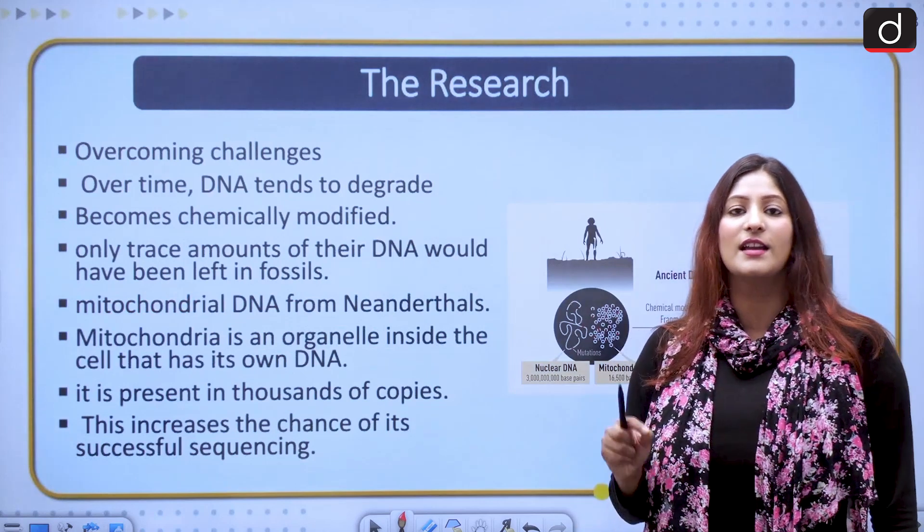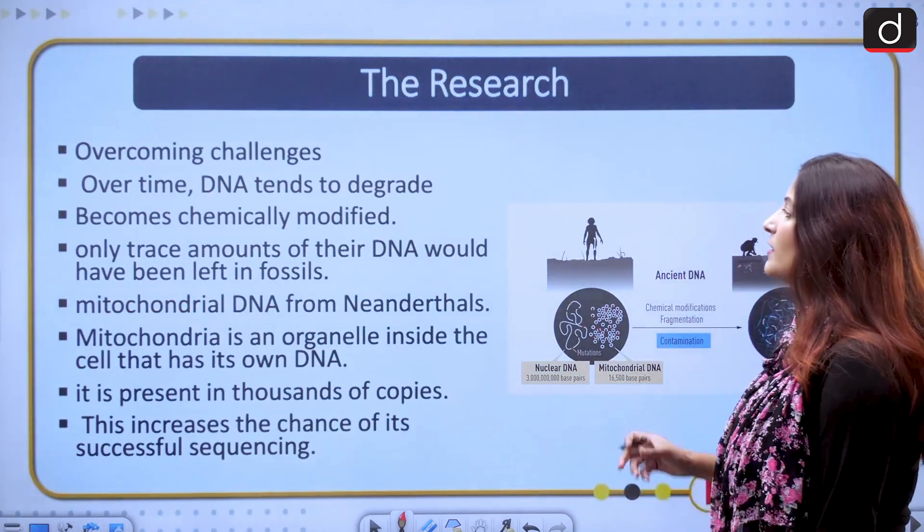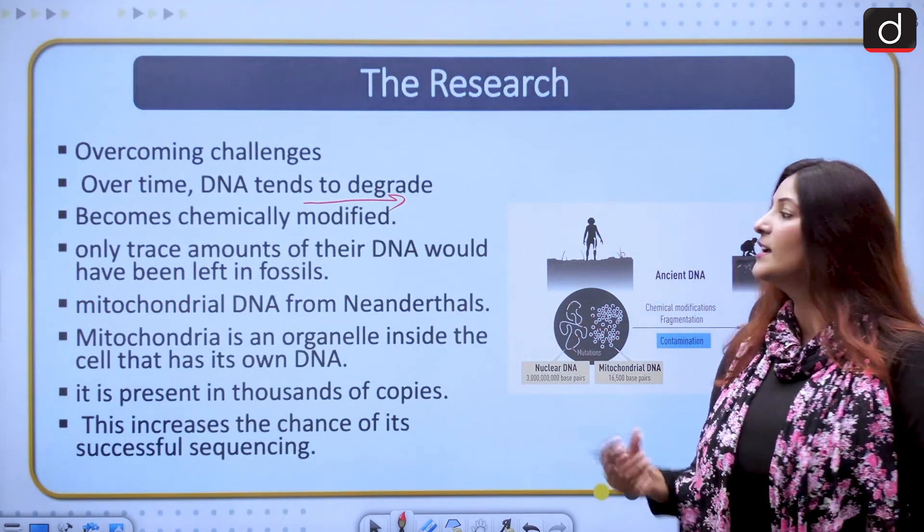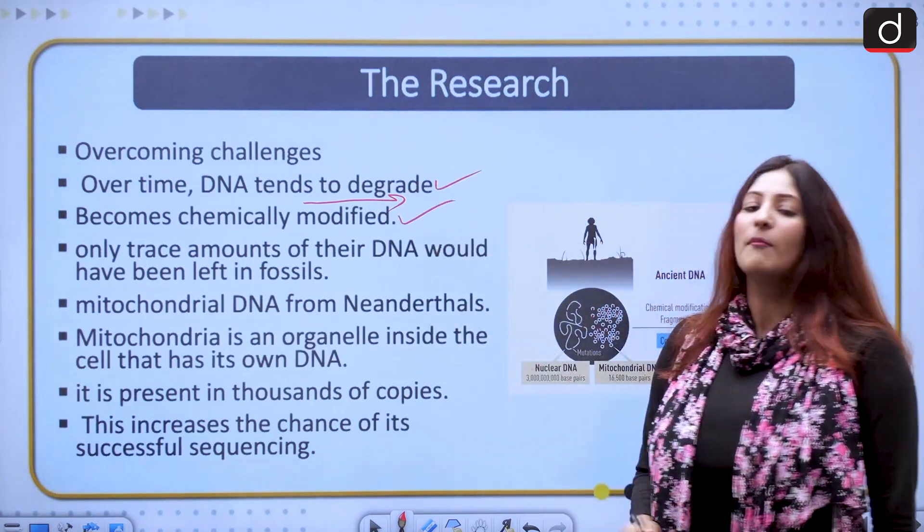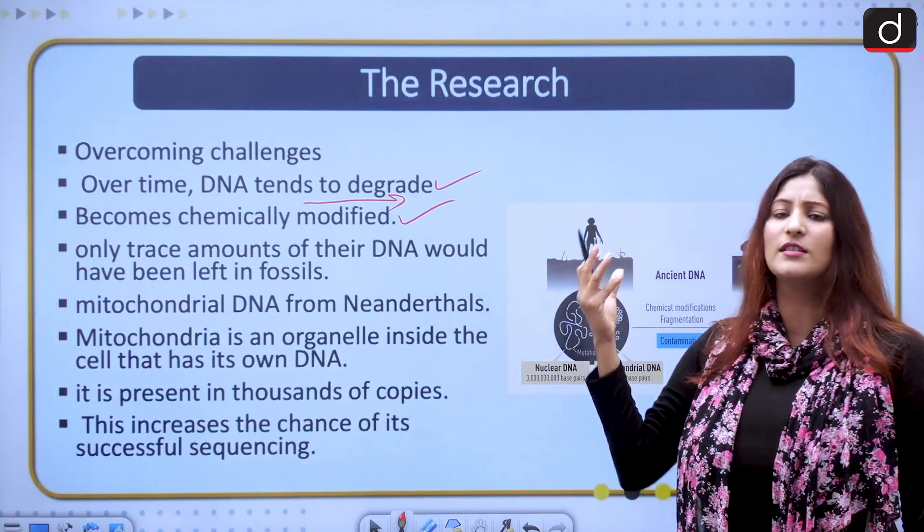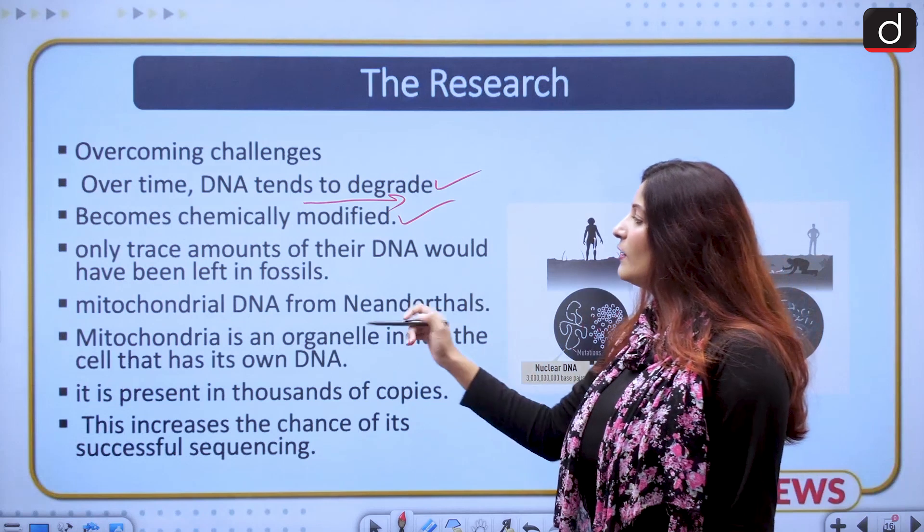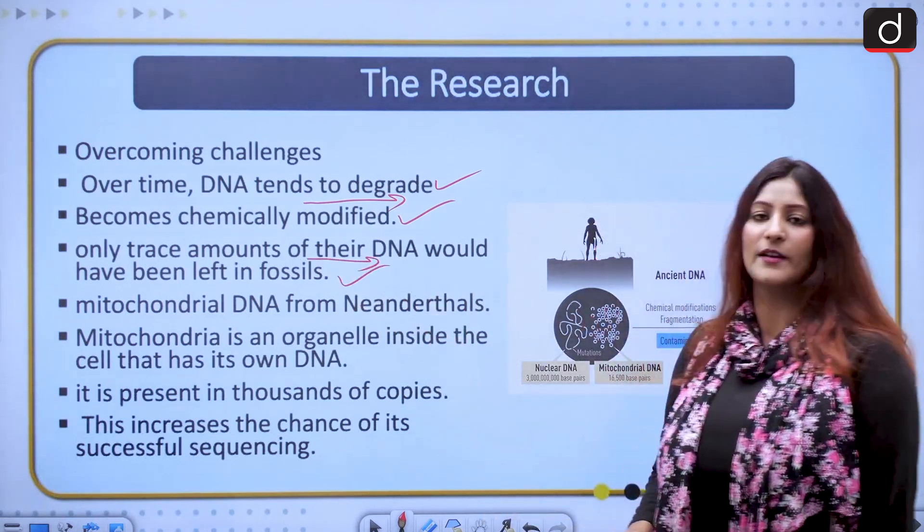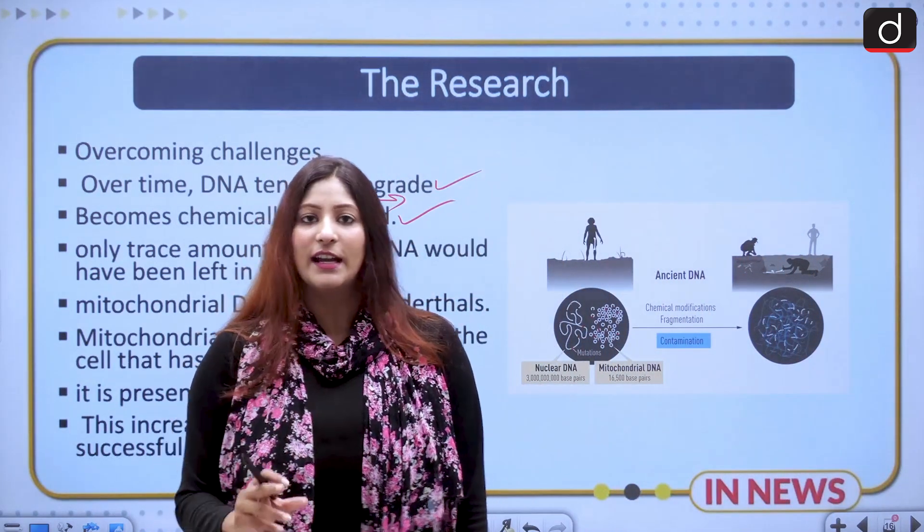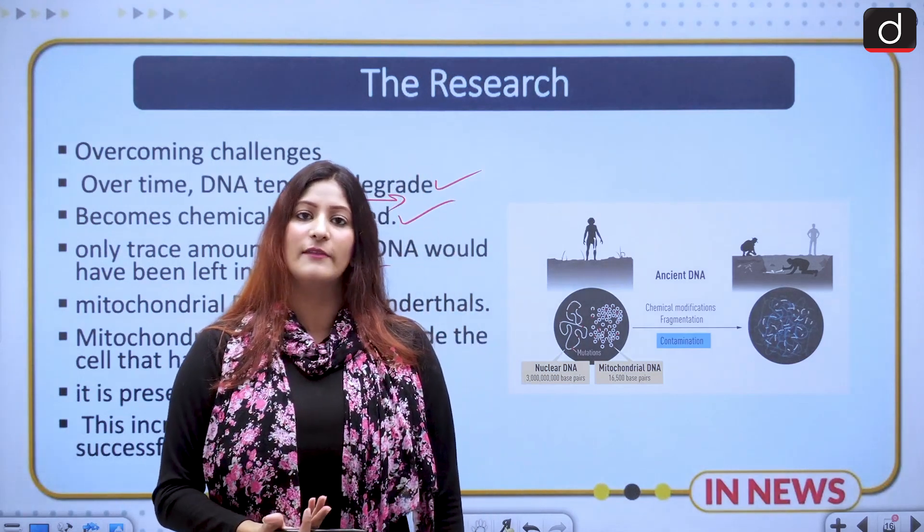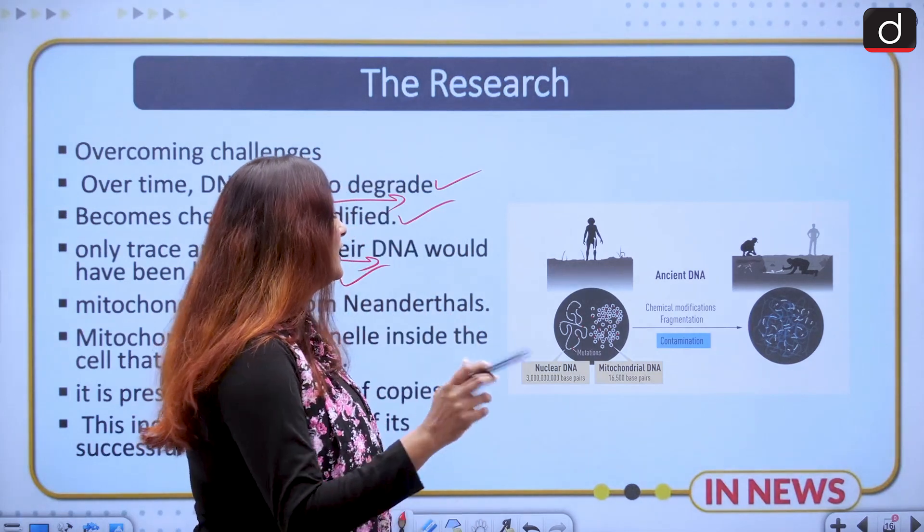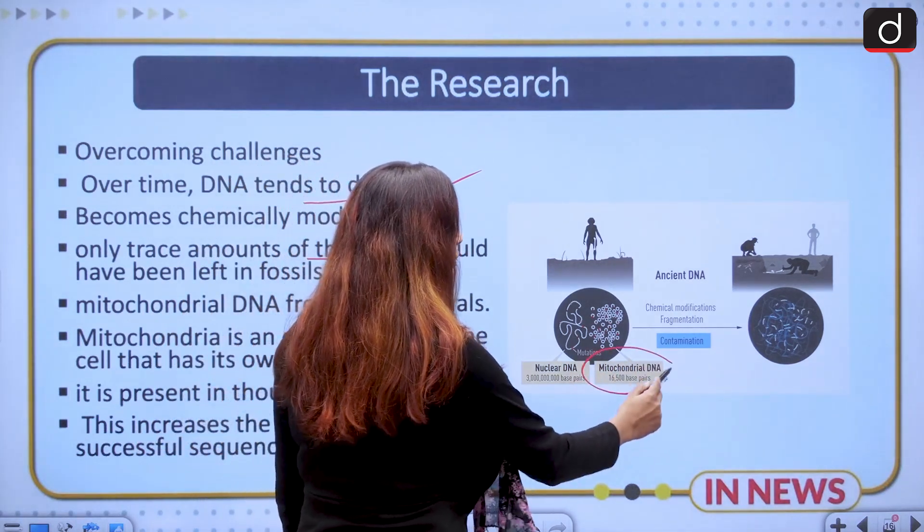The research has certain challenges. First, what were the challenges? Over time, DNA which consists all the information about our genetics, gets degraded and becomes chemically modified. Whatever could be present in the fossils, because fossils are so many years old, only trace amounts of the DNA would have been left. DNA tends to degrade, chemically it degrades itself or it modifies. So what did Dr. Pääbo think? Let's research on mitochondrial DNA.